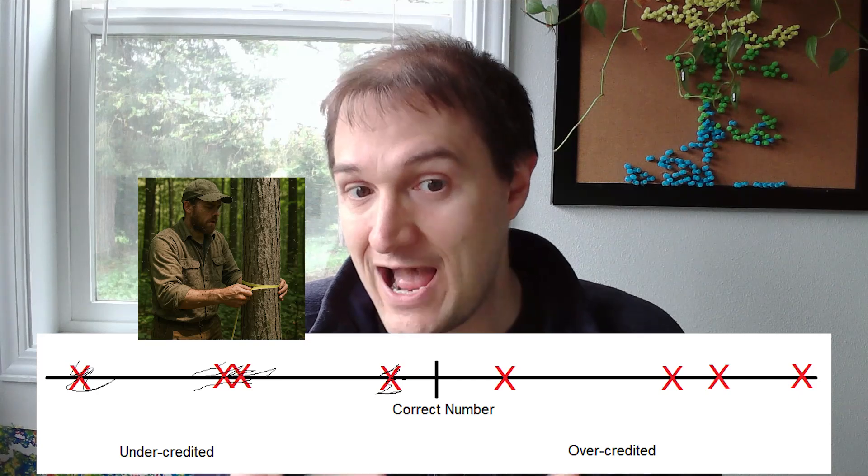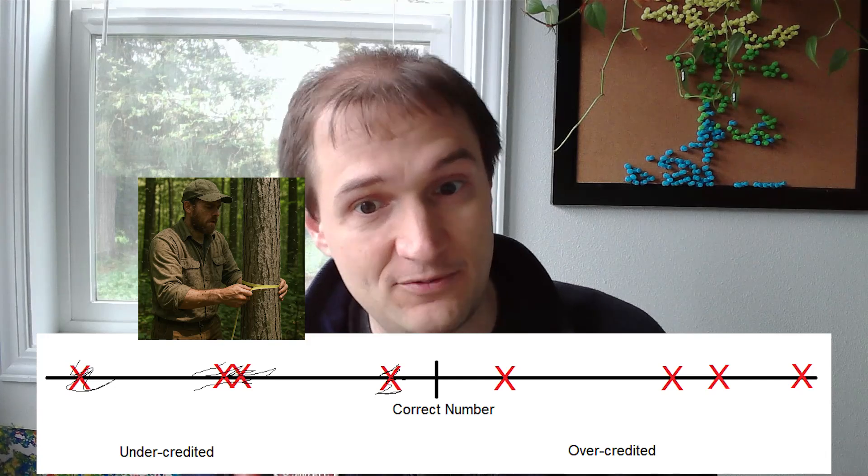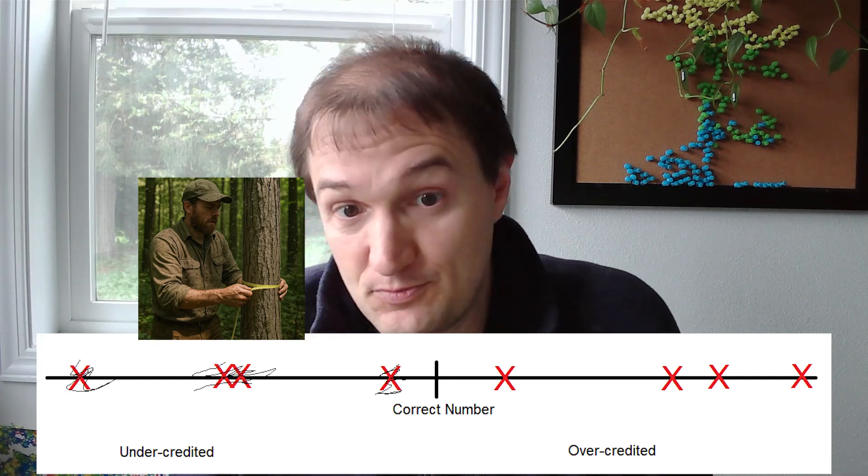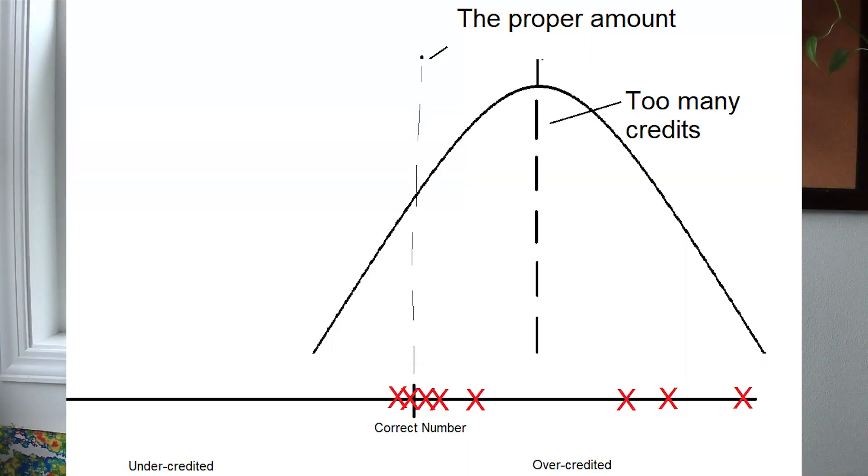Whereas the ones that are happy with the carbon estimate or are maybe issued a little too many credits, they're going to be fine with it. They're not going to go and invest money to prove that they have less carbon than they say. So what's happened here is that carbon project developers who are not getting enough credits through the regional approach are going to spend extra money to get their number up. And just like that, they're going to get the correct estimate, and we still have these projects that are over-credited. The central limit theorem has been destroyed.